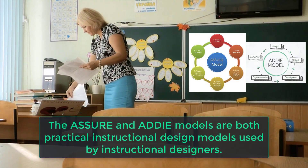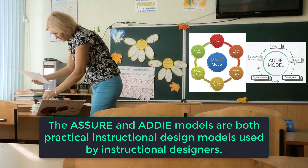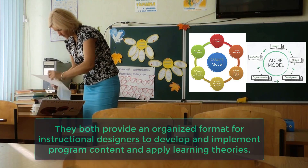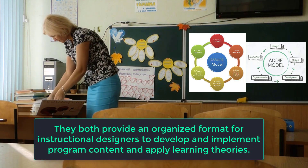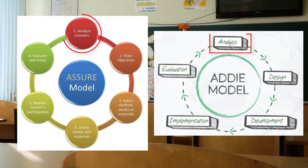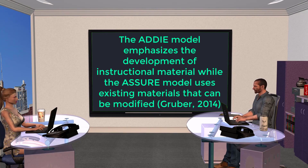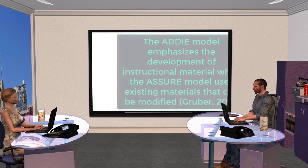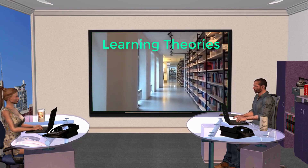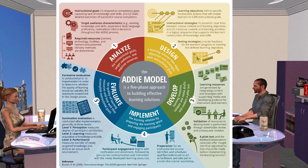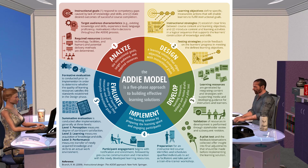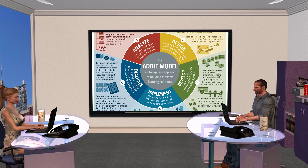The ASSURE and ADDIE models are both practical instructional design models that provide an organized format to develop and implement program content and apply learning theories. Both models begin with an analysis of the instructional problem and learner characteristics and end with an evaluation phase. The ADDIE model emphasizes the development of instructional material, while the ASSURE model uses existing materials that can be modified. The ADDIE model works well in performance improvement solutions, as it enables formative evaluations through each phase for earlier identification of problems, and thus supports corporate training solutions.